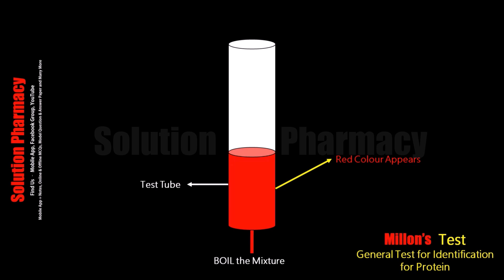So how does this red color form in the presence of tyrosine? What is the principle of this test? Millon's reagent is prepared by dissolving mercuric nitrate in nitric acid and then diluting it with water. This is how Millon's reagent is prepared.